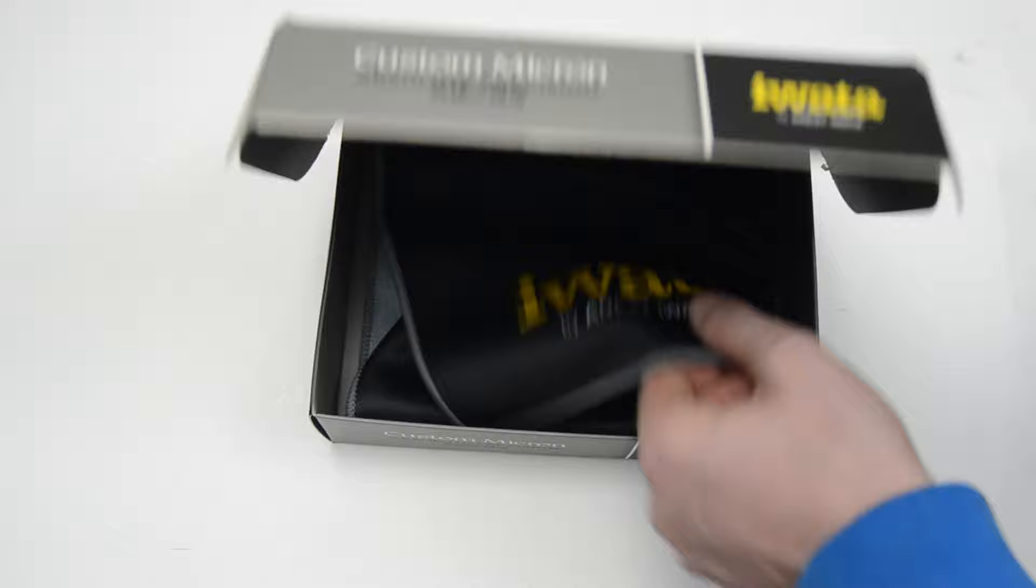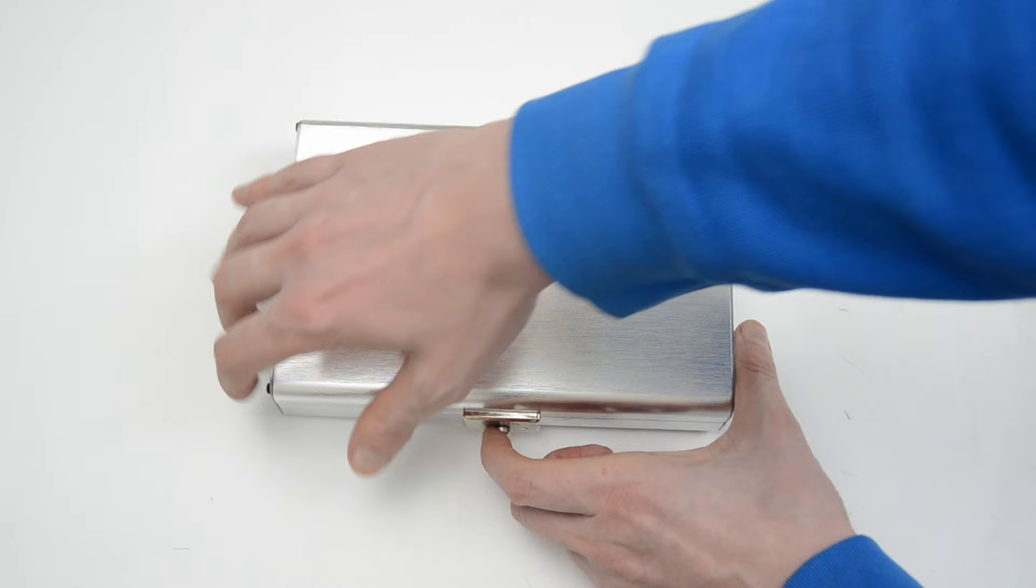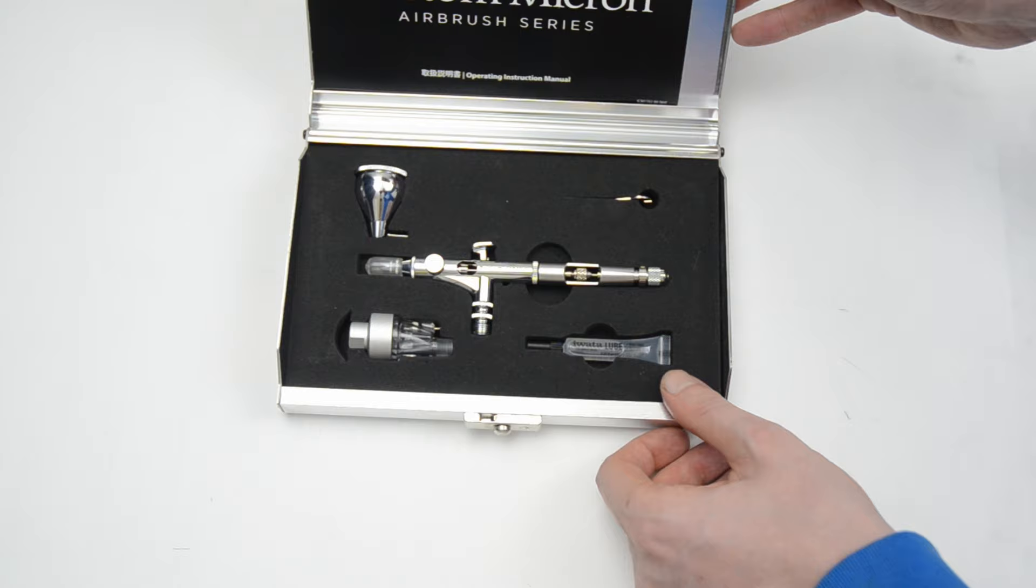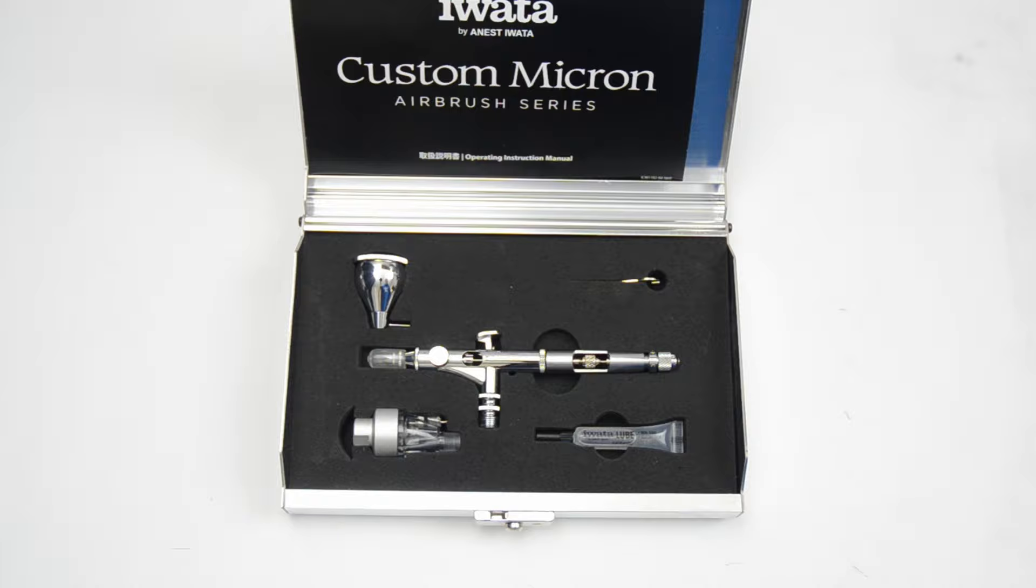The airbrush comes packaged nicely in this aluminum box wrapped in a microfiber cloth with the Iwata logo on it. Inside the box is the airbrush, a 7ml paint cup, a small tube of Iwata Super Lube, a wrench for removing the nozzle, and a moisture trap.